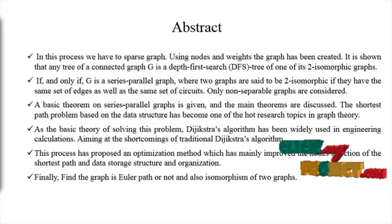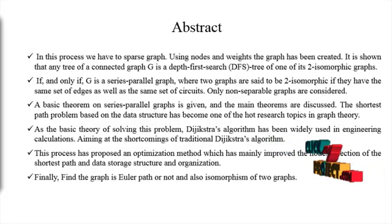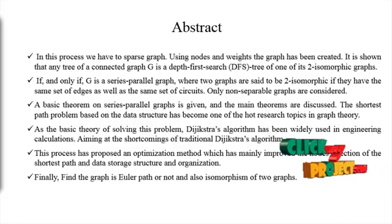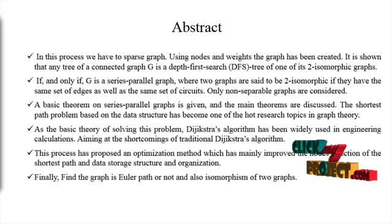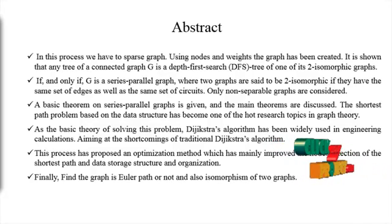The shortest path problem is the problem of finding a path between two vertices in a graph such that the sum of the weights of its edges is minimized. The problem of finding the shortest path between two intersections on a road map can be modeled as a special case of the shortest path problem in graphs.